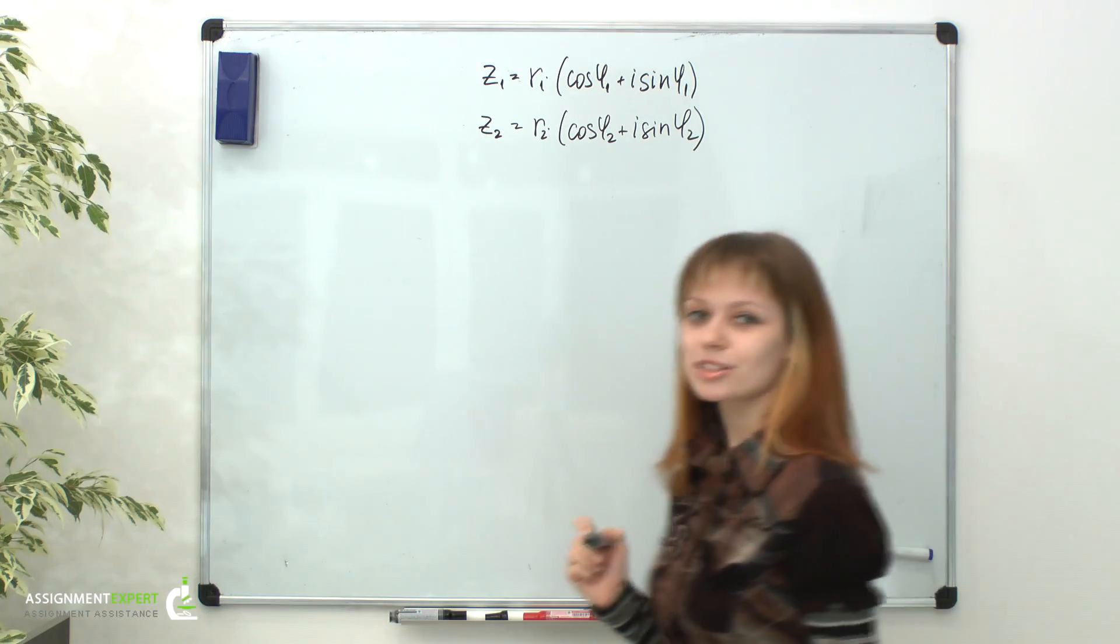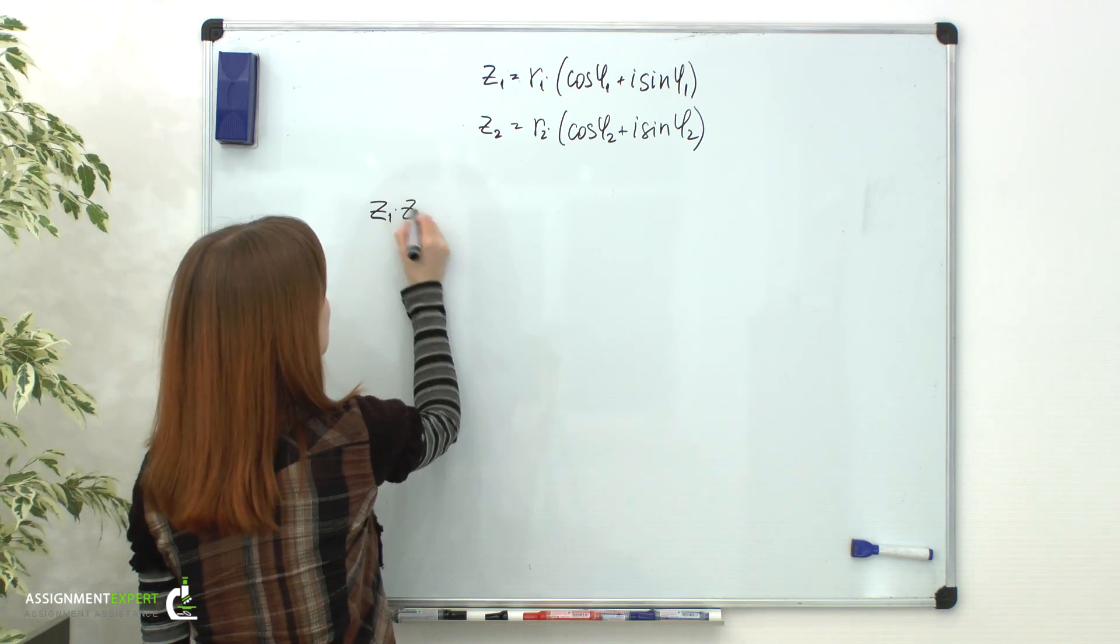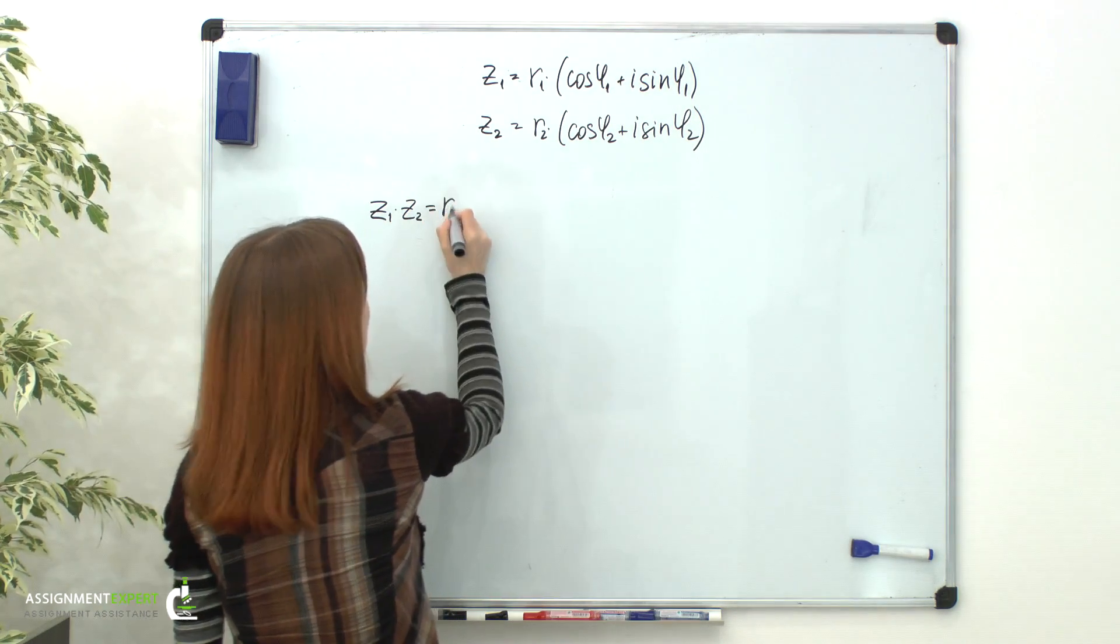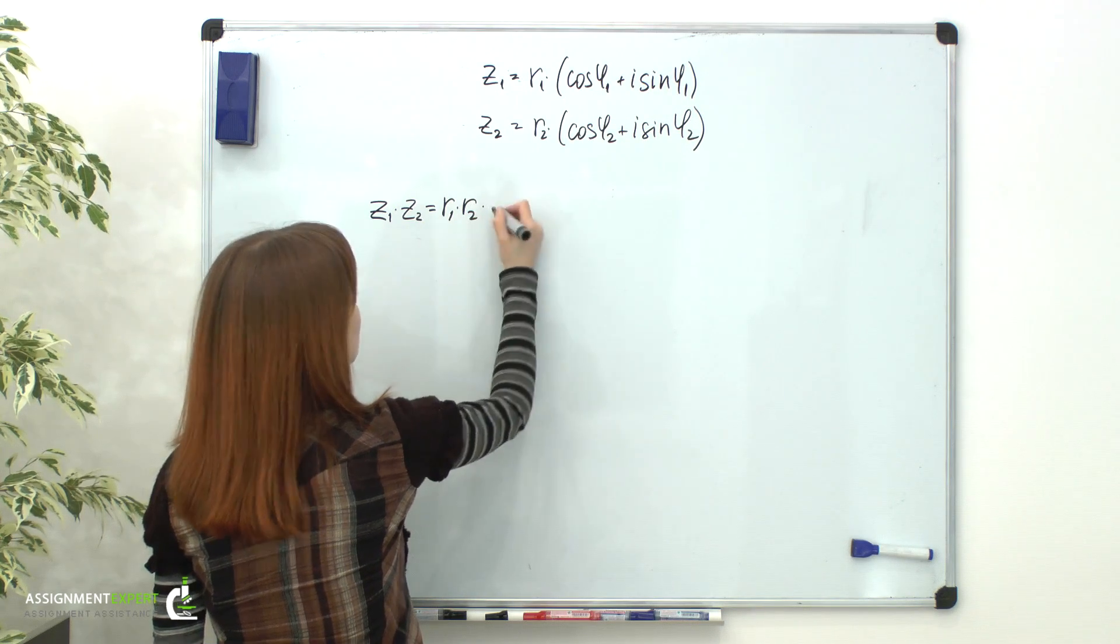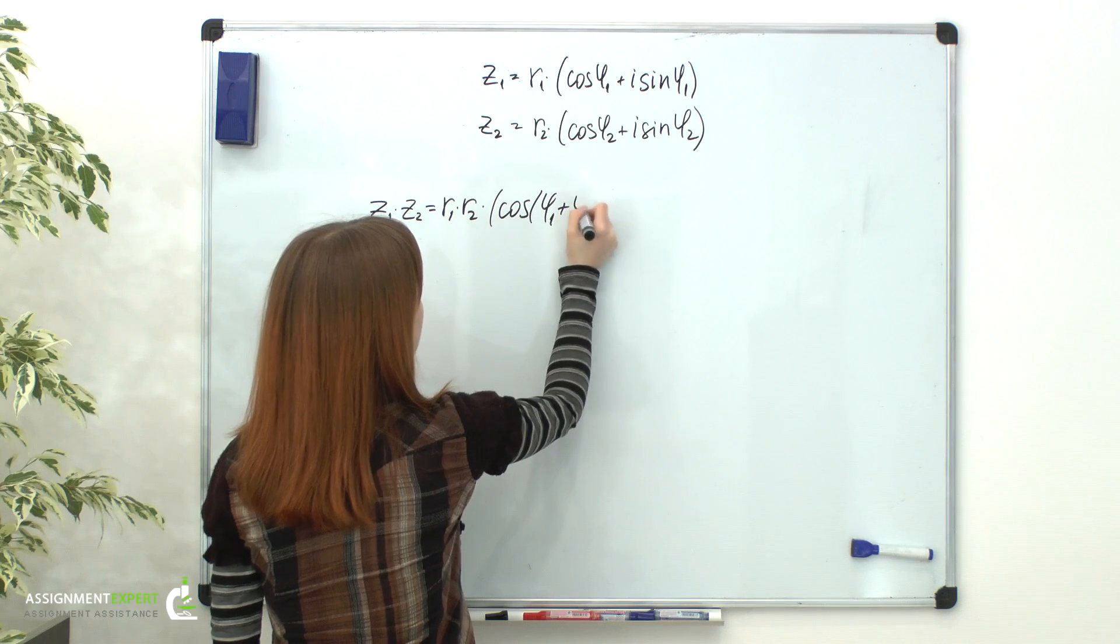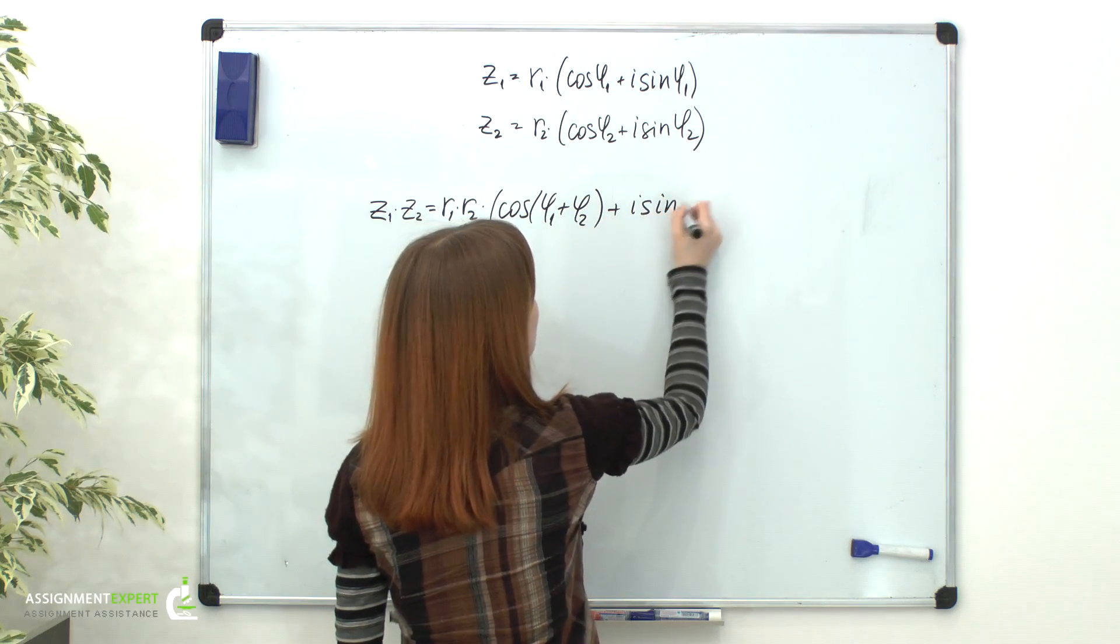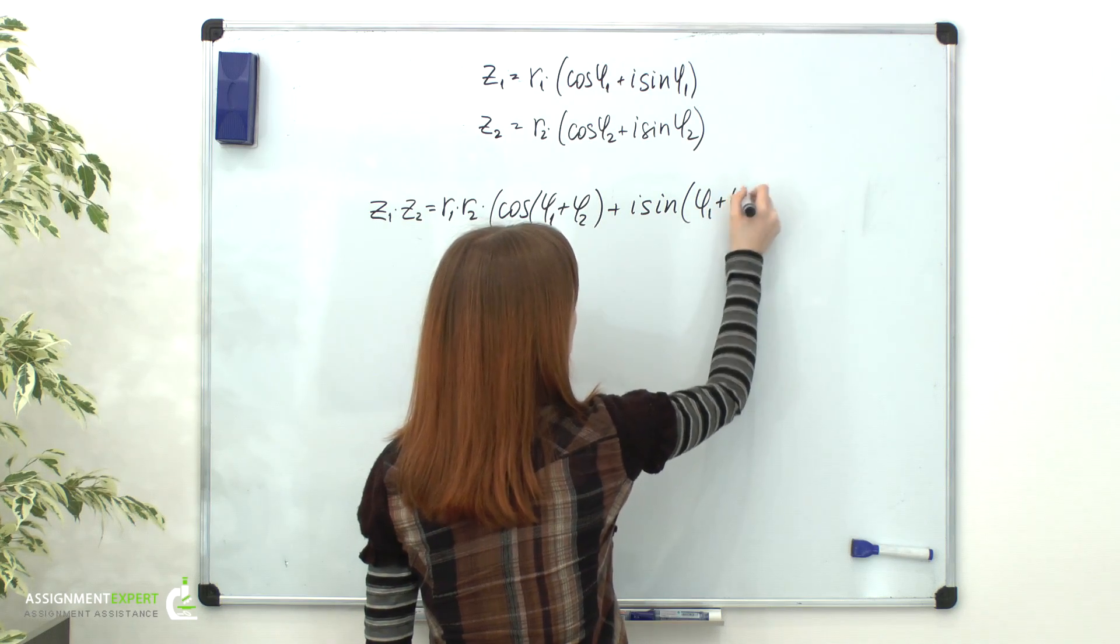And their product will be the following: z1 times z2 equals r1 times r2 times cosine of phi1 plus phi2, plus i sine of phi1 plus phi2.